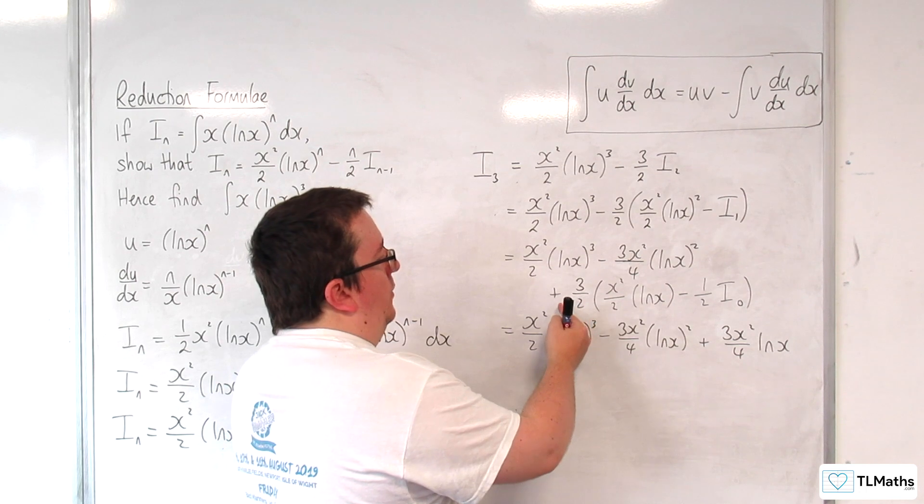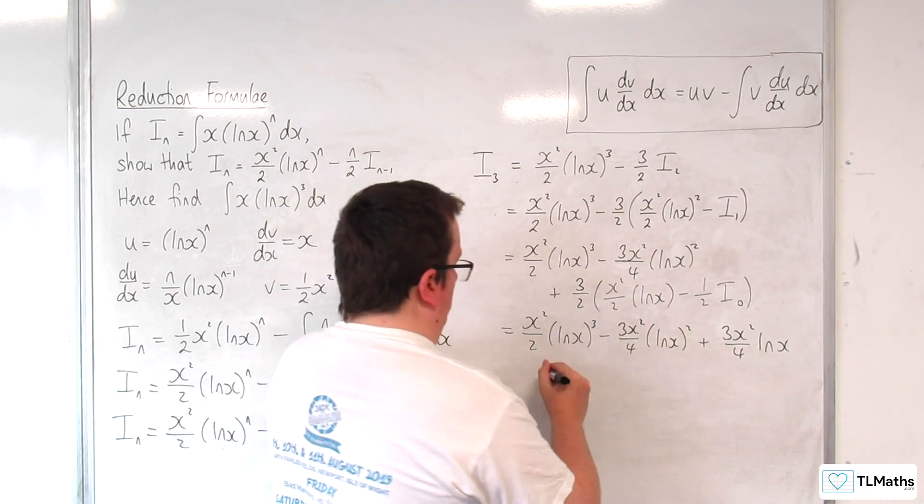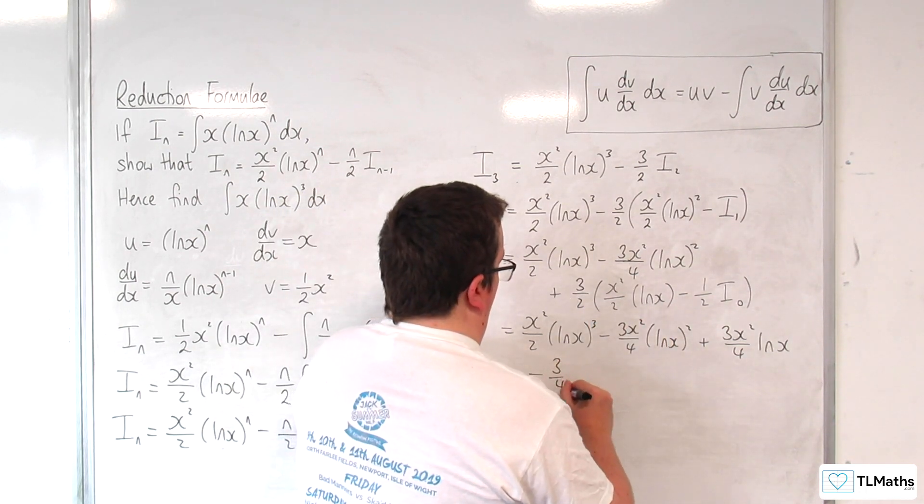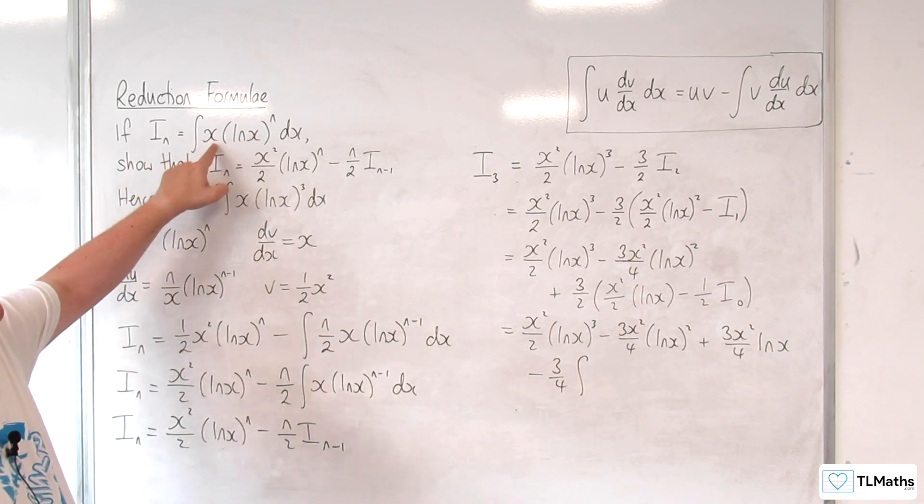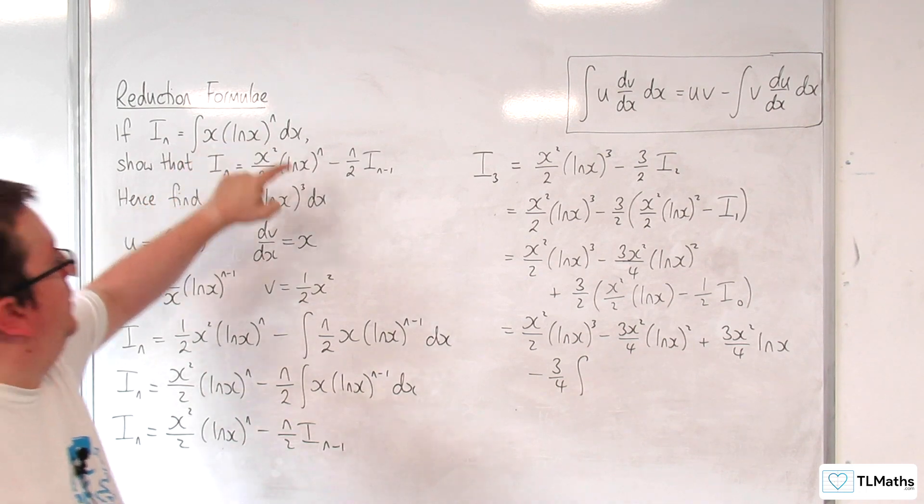take away 3 quarters of i_0. So go back up here, and now we've got the integral of x dx.